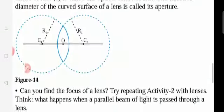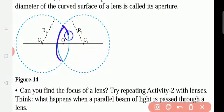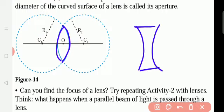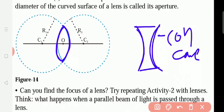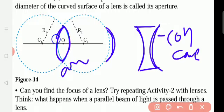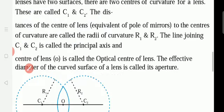Spherical mirrors have two types: concave mirror and convex mirror. Spherical lenses also have two types: convex lens and concave lens. The difference between spherical mirrors and spherical lenses is that spherical mirrors have only one curve, but spherical lenses have two curved surfaces.